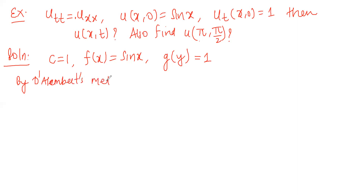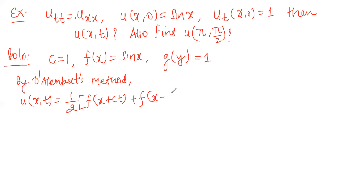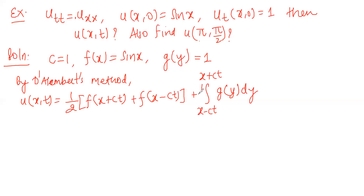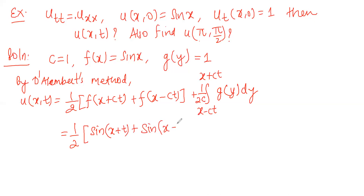By D'Alembert's method, u(x, t) = (1/2)[f(x + ct) + f(x − ct)] + (1/2c) times the integral from x − ct to x + ct of g(y) dy. Since c = 1 and f(x) = sin(x), this becomes (1/2)[sin(x + t) + sin(x − t)] + (1/2) times the integral from x − t to x + t of 1 dy.